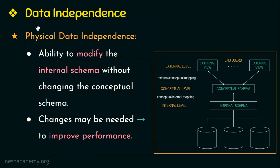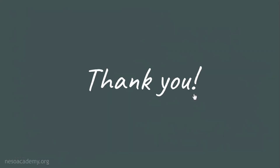Data independence occurs when we change the schema at one level without affecting the schema at the next higher level — only the mapping between the two levels is changed. With this, we come to the end of this video. Hope you understood the concept of three-schema architecture and also the concept of data independence. Thank you.